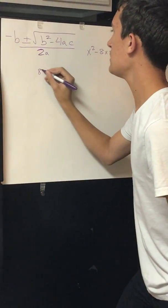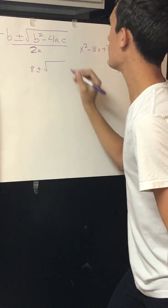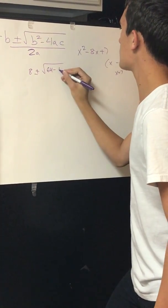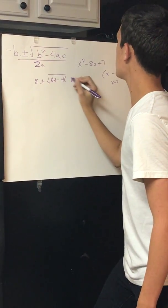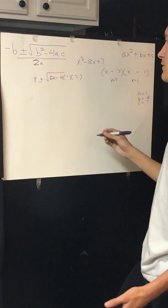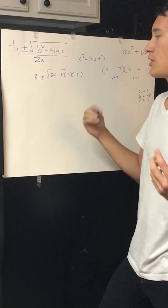So you have negative b, which would be 8 plus or minus the square root of 8 squared, which is 64, minus 4, parentheses, is 1 and 7. This all adds up to 28, so 64 minus 28 equals 36.